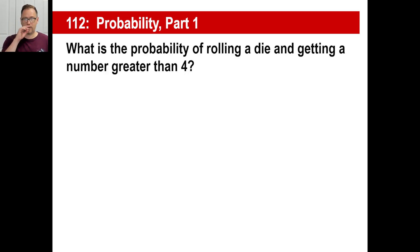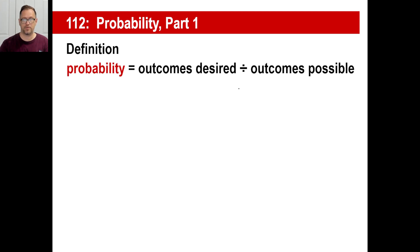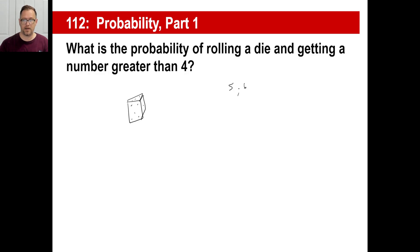What is the probability of rolling a die and getting a number greater than four? The possibilities greater than four are five and six. The definition of probability is the outcomes desired — there are two of them — divided by the outcomes possible. The outcomes possible are one, two, three, four, five, and six. So you have two on top and six on the bottom. Two out of six is your probability.